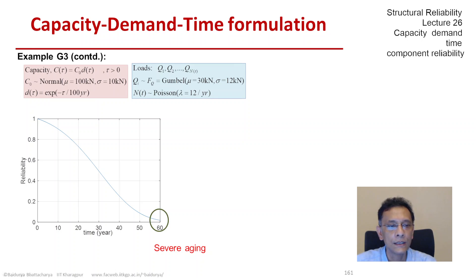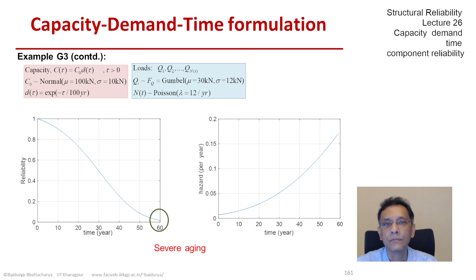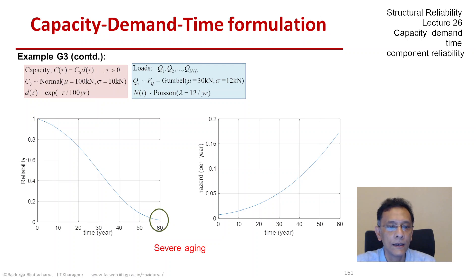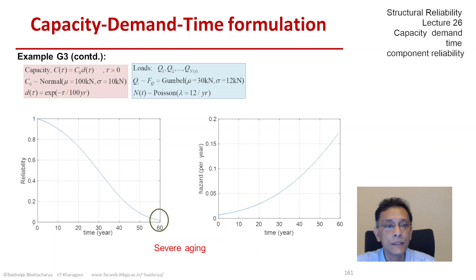The hazard function starts from something like 0.007 and then keeps climbing. If you remember in case 3B, we had a hazard function that was going down — we no longer have that luxury.